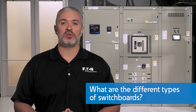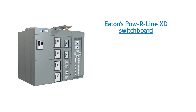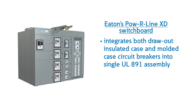What are the different types of switchboards? General purpose switchboards can include integrated insulated case circuit breakers, molded case circuit breakers, fused switches, metering, and surge protection. The vast majority of switchboard applications can be served with a general purpose switchboard. Eaton's Powerline XD switchboard is a reliable solution that integrates both draw-out insulated case and molded case circuit breakers into a single UL891 assembly, including Eaton's new Power Defense circuit breakers.